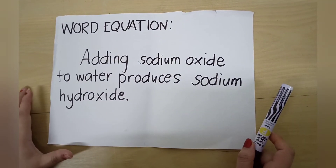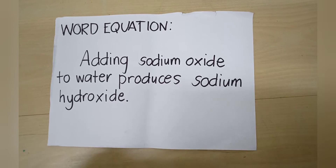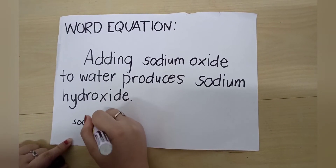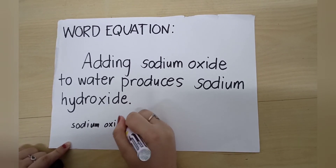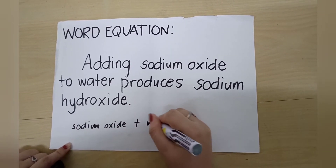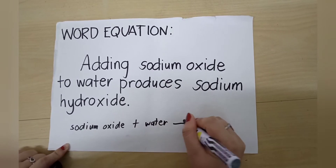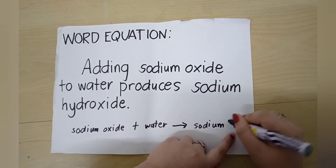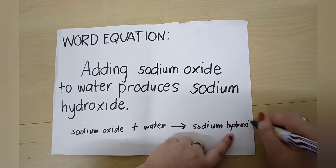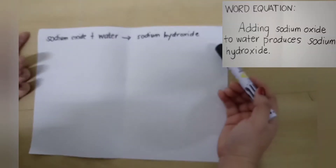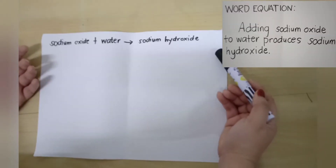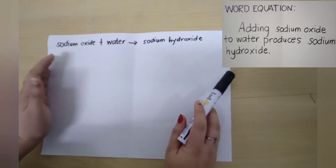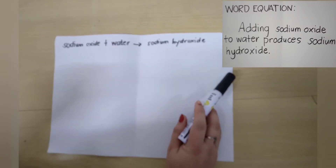Based on that analysis, we are able to have the simplified word equation. So this is sodium oxide plus water produces sodium hydroxide, which is the product. Now we have the simplified word equation with the chemical substances and the symbols, and these substances will be written as chemical formulas.